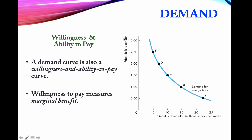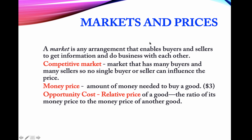Marginal benefit decreases as we consume more, or equivalently, it is higher when we are consuming less of the good. We will be using the term 'marginal' frequently, along with 'market' — where buyers and sellers interact — and 'competitive market,' where there are so many buyers and sellers that no individual has influence on the market price.